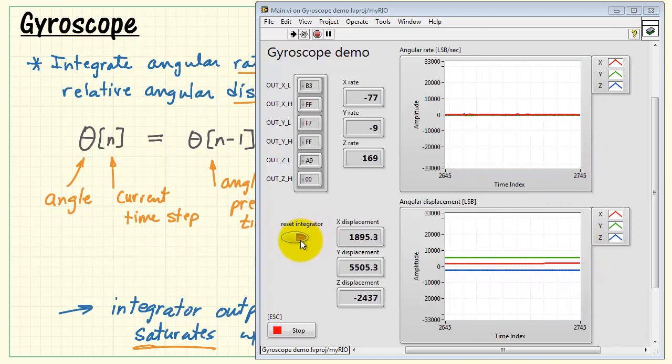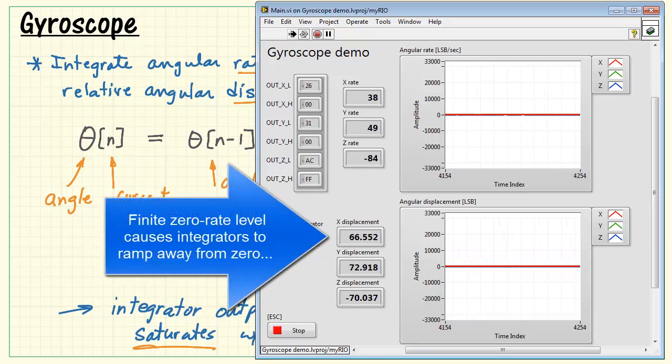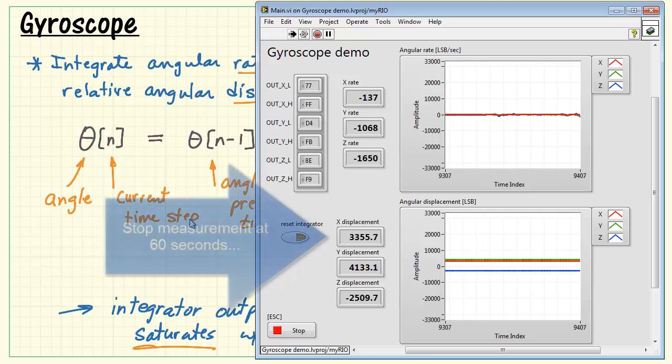Now I'm going to leave the board stationary, reset the integrators, and then take that out of reset. Now watch what happens with the numerical values. You see that the zero rate level causes the integrators to ramp away from zero. Some go in a positive direction, some go in a negative direction, like the z-displacement.